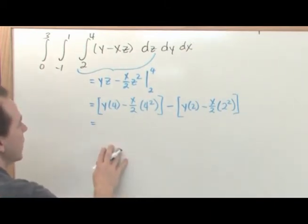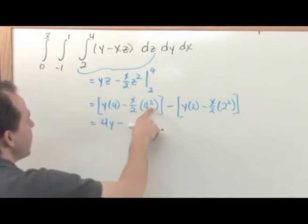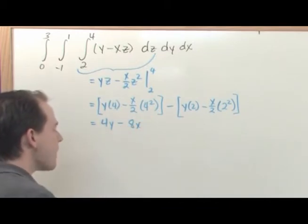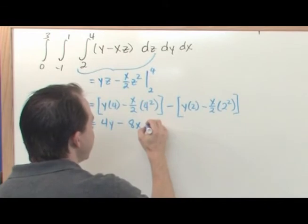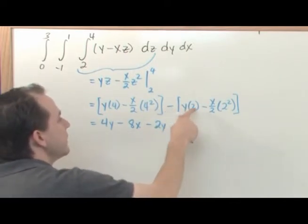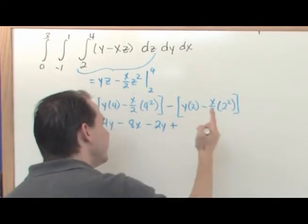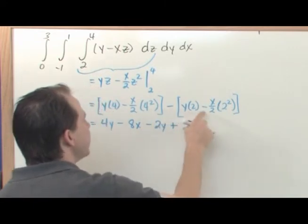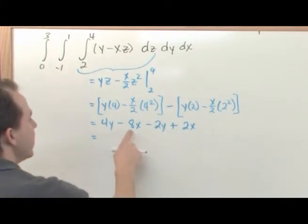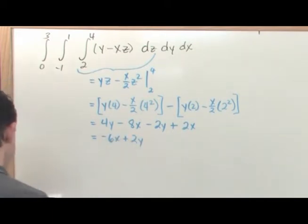Rewriting: 4y minus 16/2 gives 8x. Then negative 2y, and negative times negative gives positive, so plus 2x from the lower limit. Collecting all terms: negative 8x plus 4y minus negative 2y plus 2x gives negative 6x plus 2y.